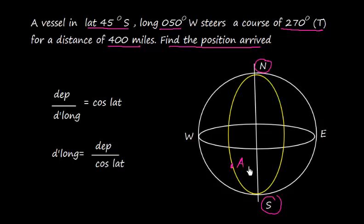Mark here point A. The vessel moves at 270 degrees, that means the vessel steers to west. So the vessel moves here in this direction, and suppose this is the final point B. We need to find the position arrived.